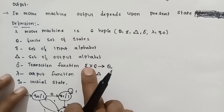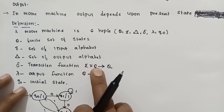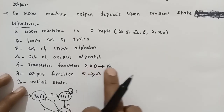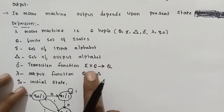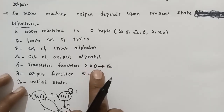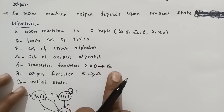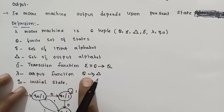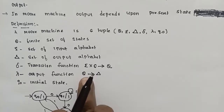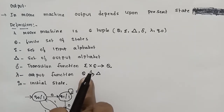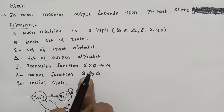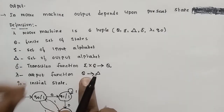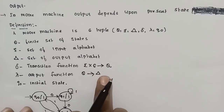Here sigma is the input and q is the state, so the input is applied to the next state. Sigma and set of states leads to set of states. Next, lambda is the output function. This lambda depends on the current state, so states lead to output alphabet.